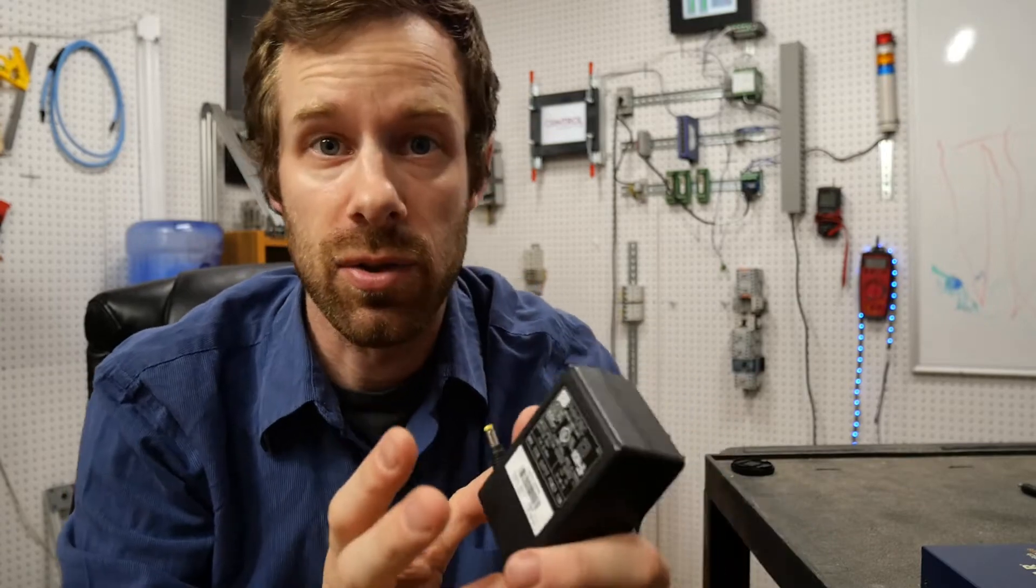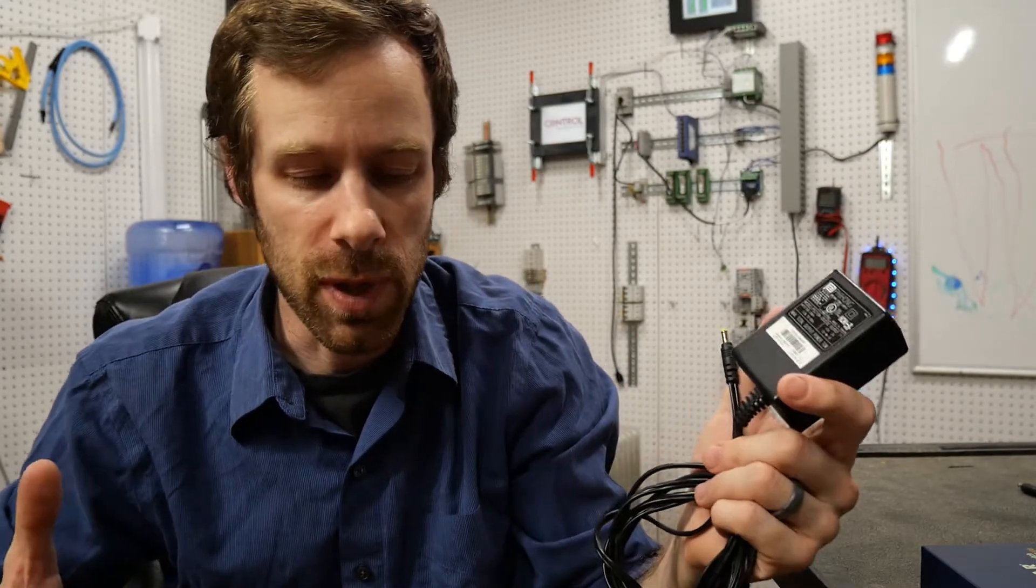So the first of those numbers is the voltage. Now voltage in an electrical circuit is like pressure, so if you put in too much pressure into something it's going to explode. Put in too much pressure into a balloon it's gonna pop. Your circuits are the same way.